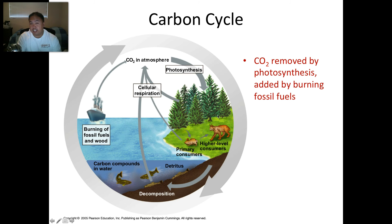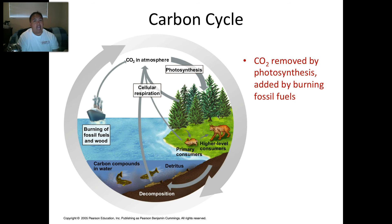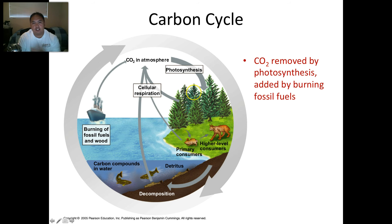Water is the easiest, so we're going to skip that. But you should know: there's precipitation, it rains, it runs off, it goes into the ocean, it evaporates, becomes a cloud, and then precipitation all over again. The carbon cycle is very simple. Basically, we breathe out carbon dioxide, plants breathe in carbon dioxide — we breathe out, they breathe in. That's what the cycle is: photosynthesis and respiration.